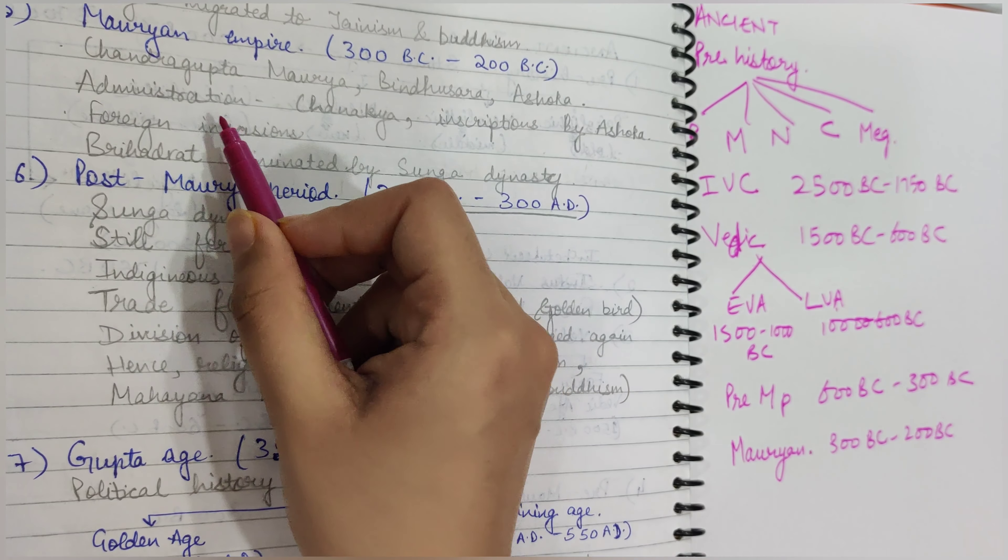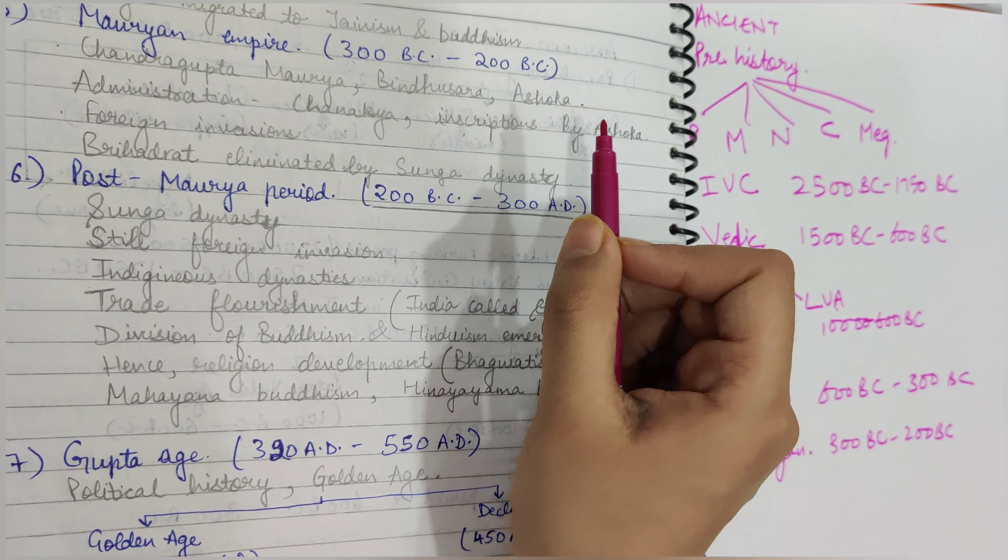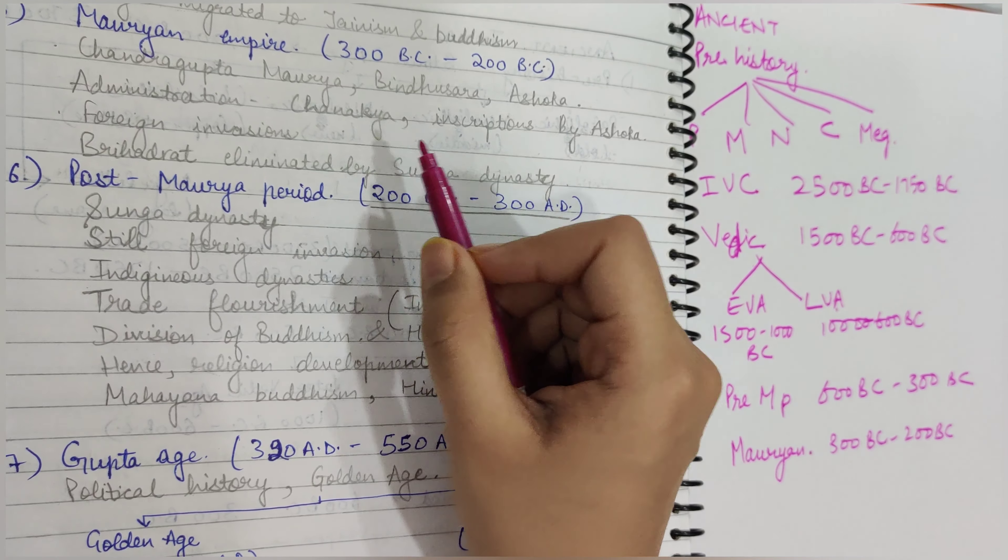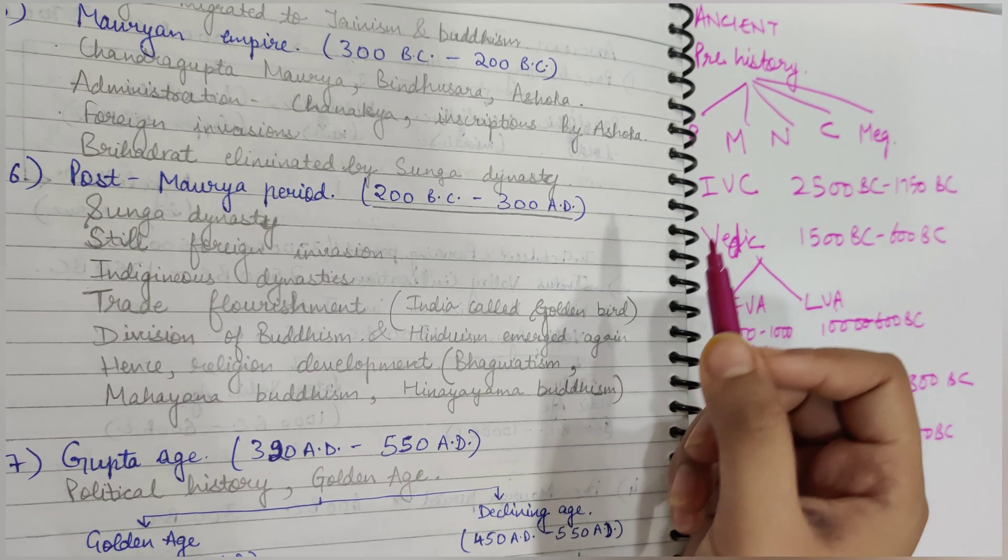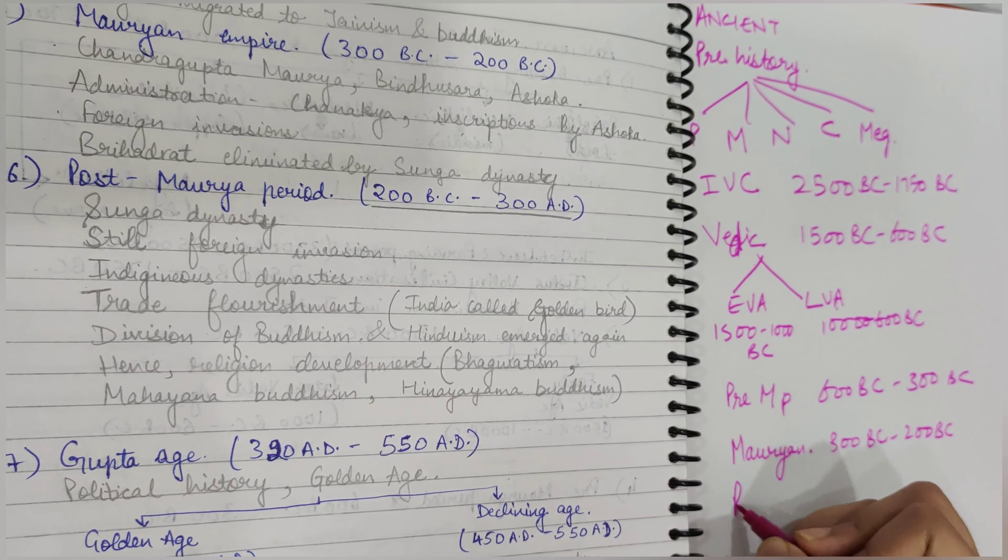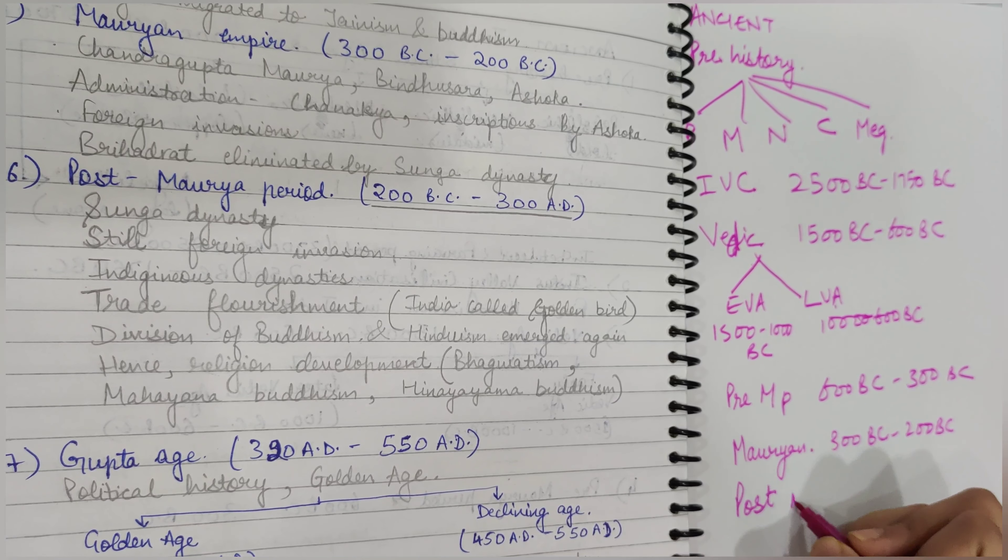In the Mauryan Empire, we will study about kings like Chandragupta Maurya, Bindusara, Ashoka, the great Chanakya, inscriptions of Ashoka, foreign invasions, and many others. After this comes the Post-Mauryan period.